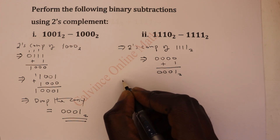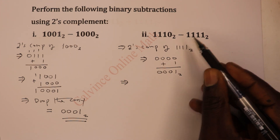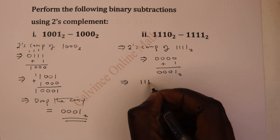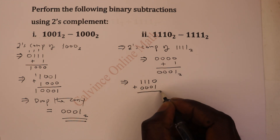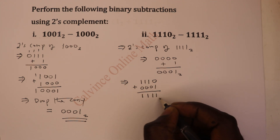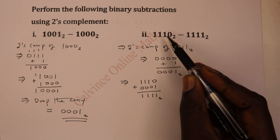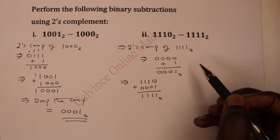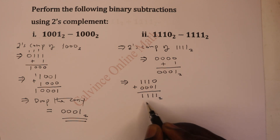The next step is to add this two's complement of the subtrahend to the minuend. So we have 1, 1, 1, 0 plus 0, 0, 0, 1. That gives us 0 plus 1 is 1, 1 plus 0 is 1, 1, 1. So that is what you get after adding the two's complement of the subtrahend to the minuend. Since the subtrahend is bigger — you are subtracting a bigger number from a smaller one — you need to again take the two's complement of the result.